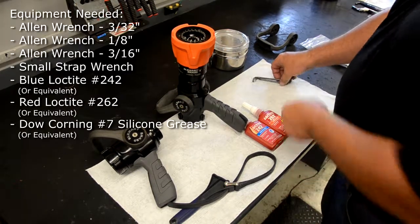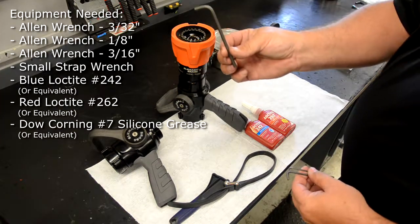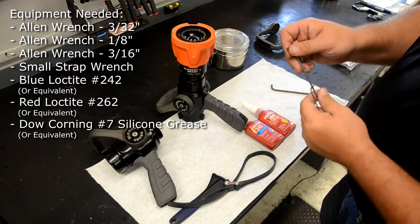The tools you'll need for this project start with three allen wrenches: a 3/32nds, a 1/8th, and a 3/16th allen wrench.